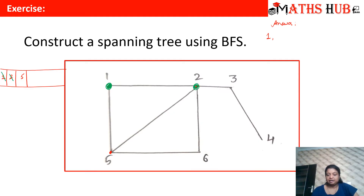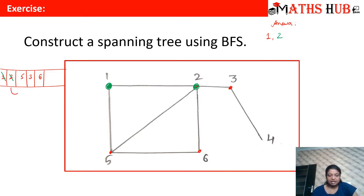Vertex 1 is done. When we move to vertex 2, we check which vertices are adjacent to it — we have vertex 3, vertex 5, and vertex 6. But in the queue, we have already inserted vertex 5. So we will insert the remaining adjacent vertices: vertex 3 and vertex 6. The next vertex in the queue is vertex 5, so we move to vertex 5 and mark it green. Vertex 5 is also done.